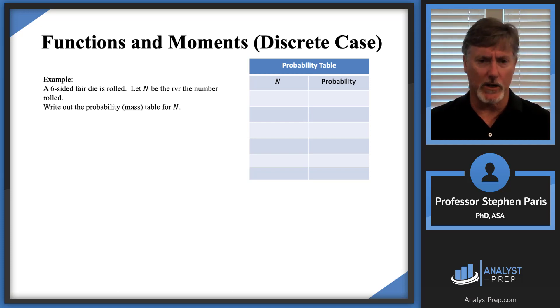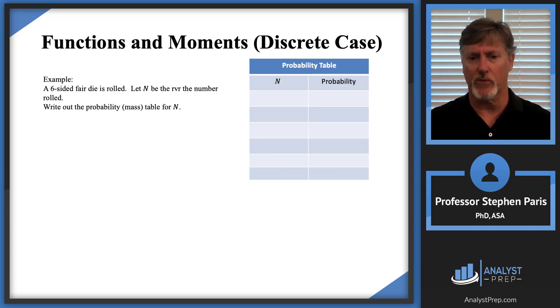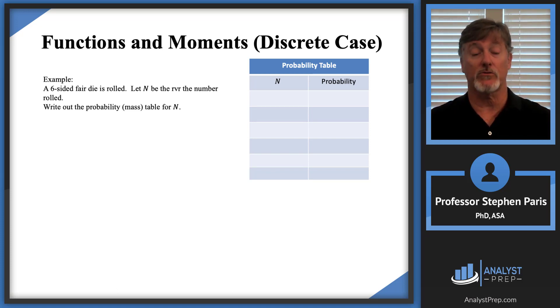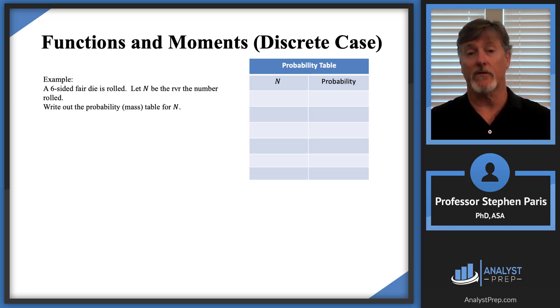A probability table is a two-column table where the first column is the support. You list out the values of the random variable — that's what it means to be discrete.